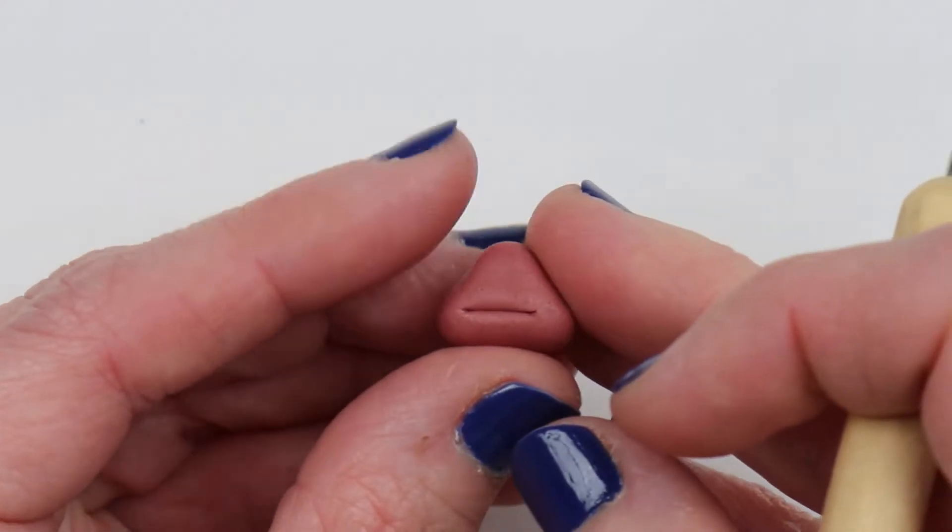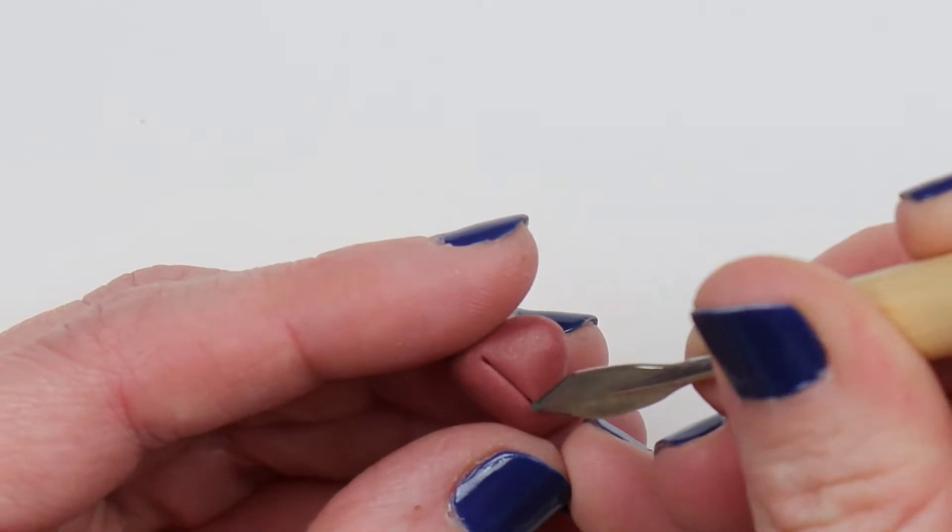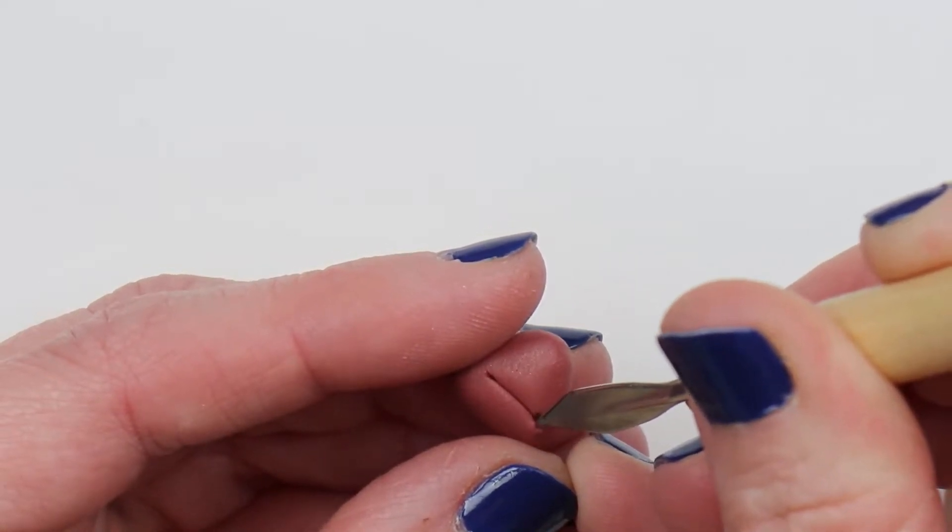And then use the pointed end of a tool to make a little hole or pocket on each corner of the mouth. This is where his teeth will set.